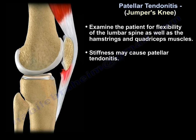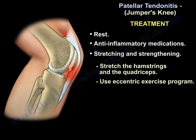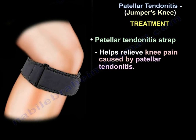Examine the patient for flexibility of the lumbar spine as well as the hamstrings and quadriceps muscles, as stiffness may cause patellar tendonitis. Treatment includes rest and anti-inflammatory medications, stretching and strengthening, stretching the hamstring and quadriceps, and use of an eccentric exercise program. A patellar tendonitis strap helps to relieve pain.